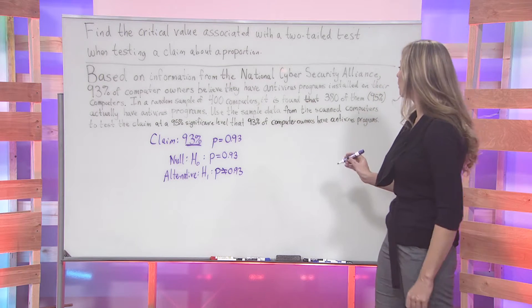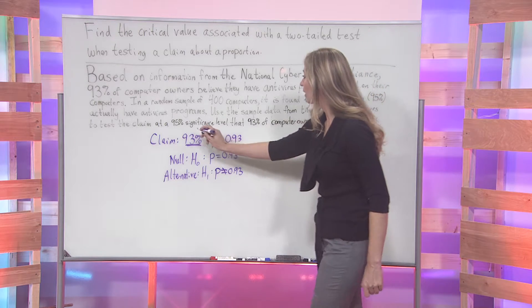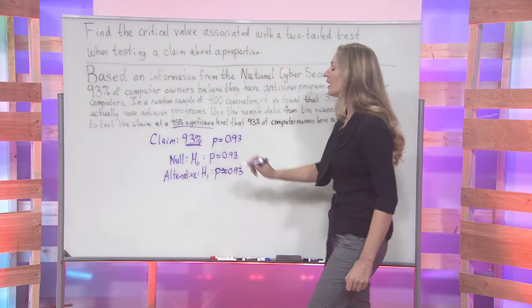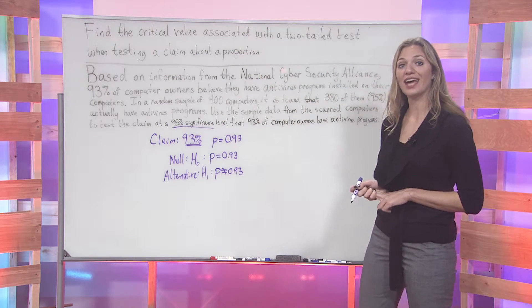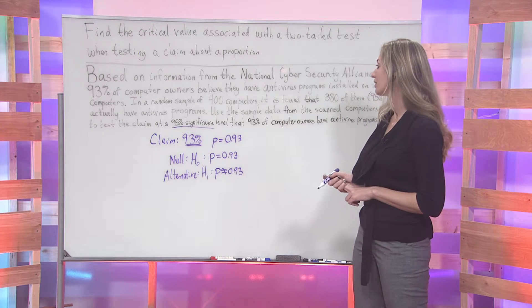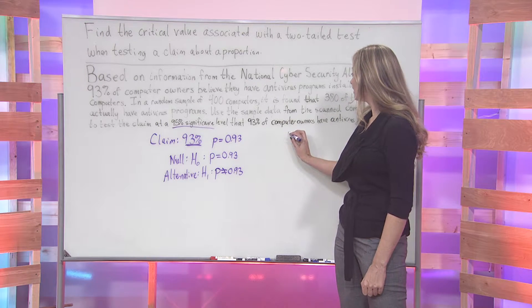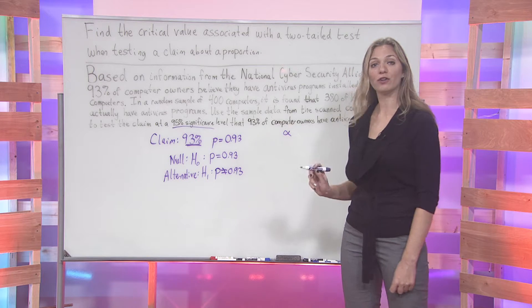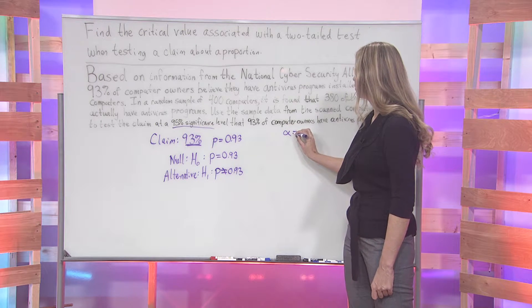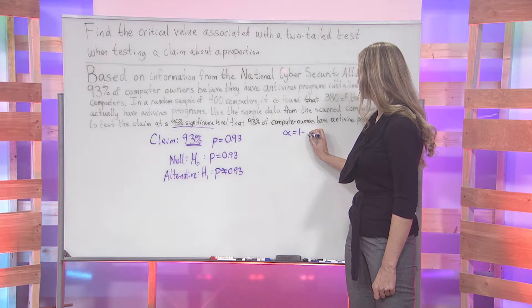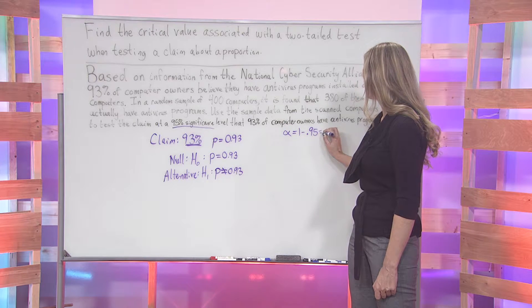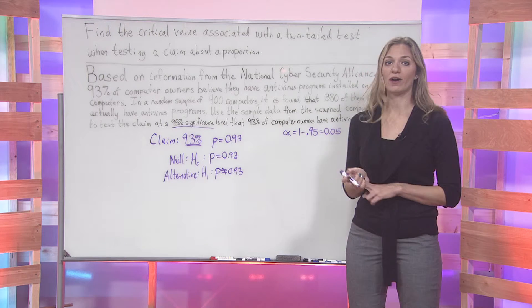Now, at this point, we want to look for our significance level. In this problem, we see that we are testing at a 95% level of significance. This means that our value of alpha will be equal to 1 - 0.95, or 0.05.